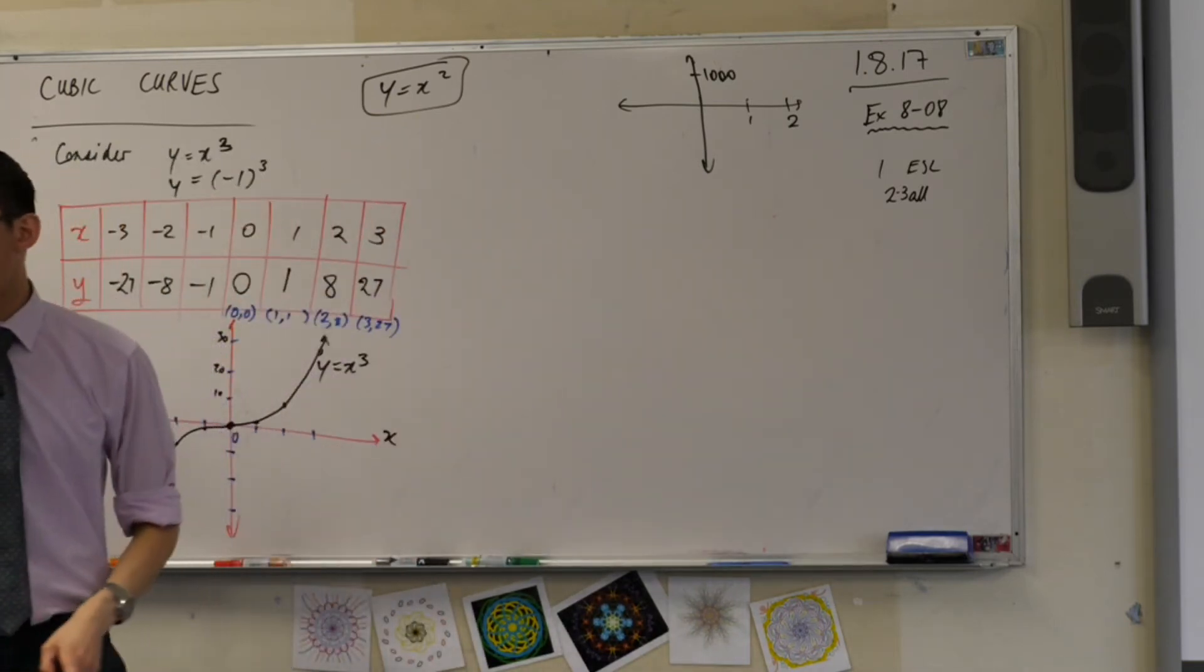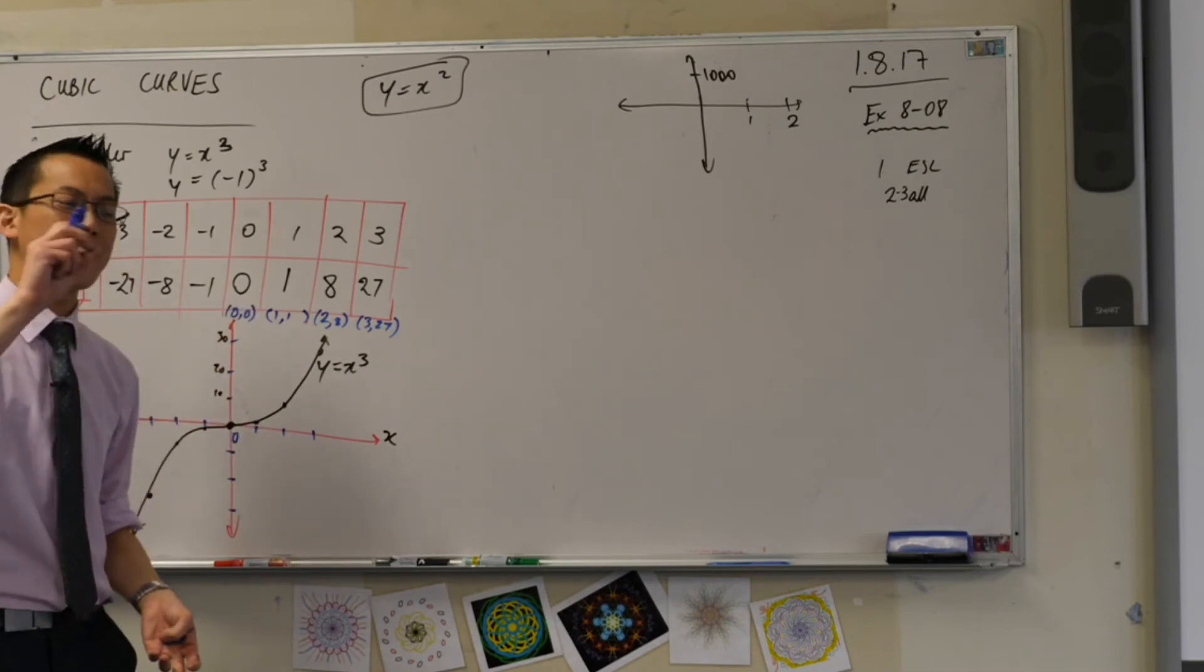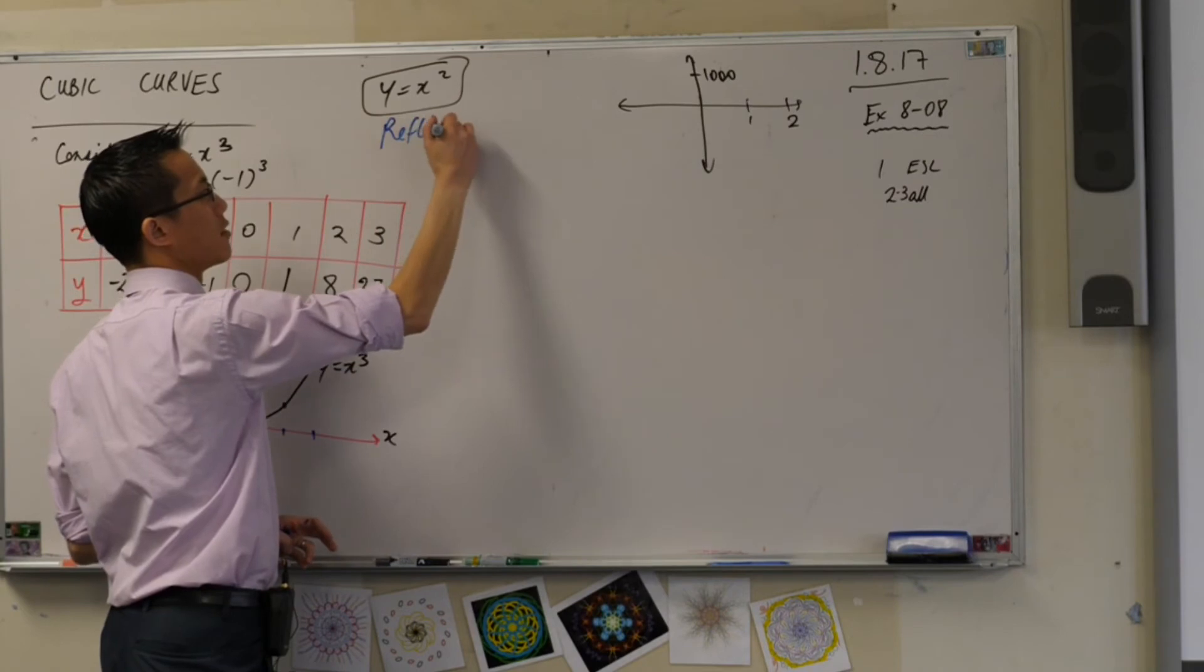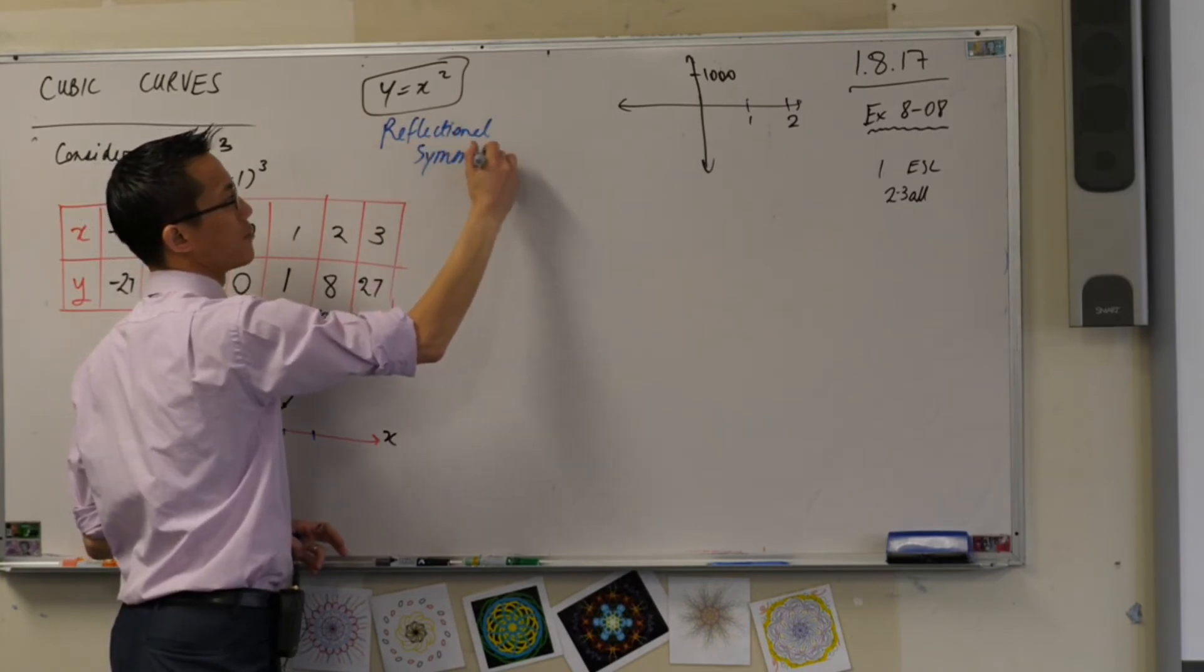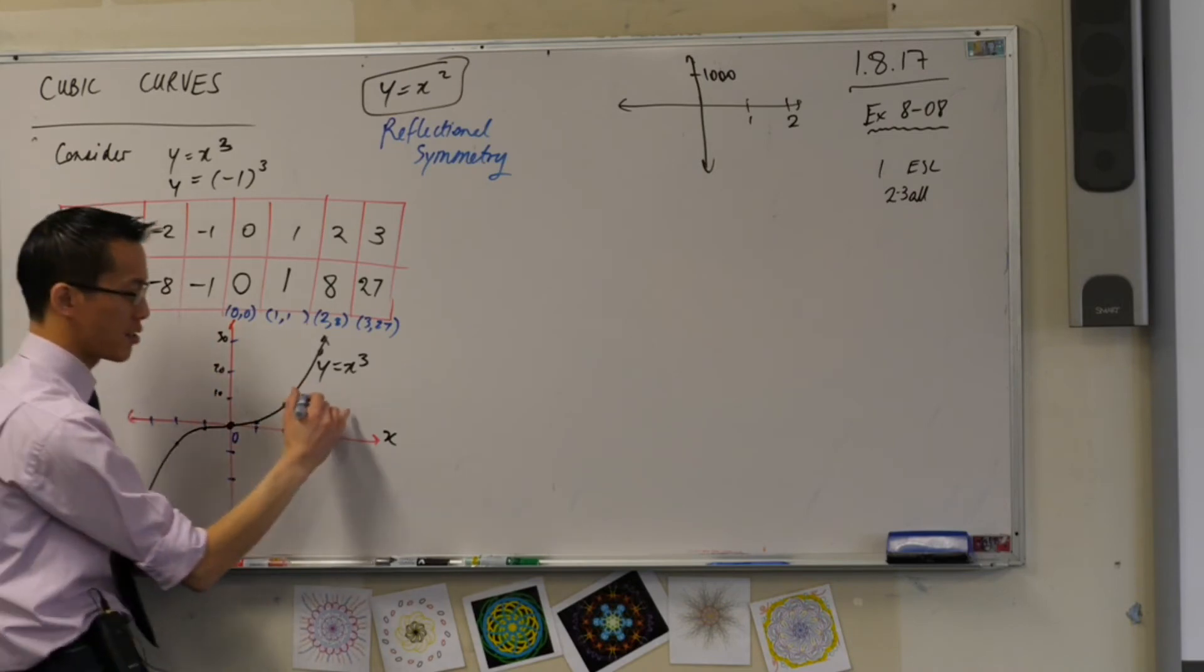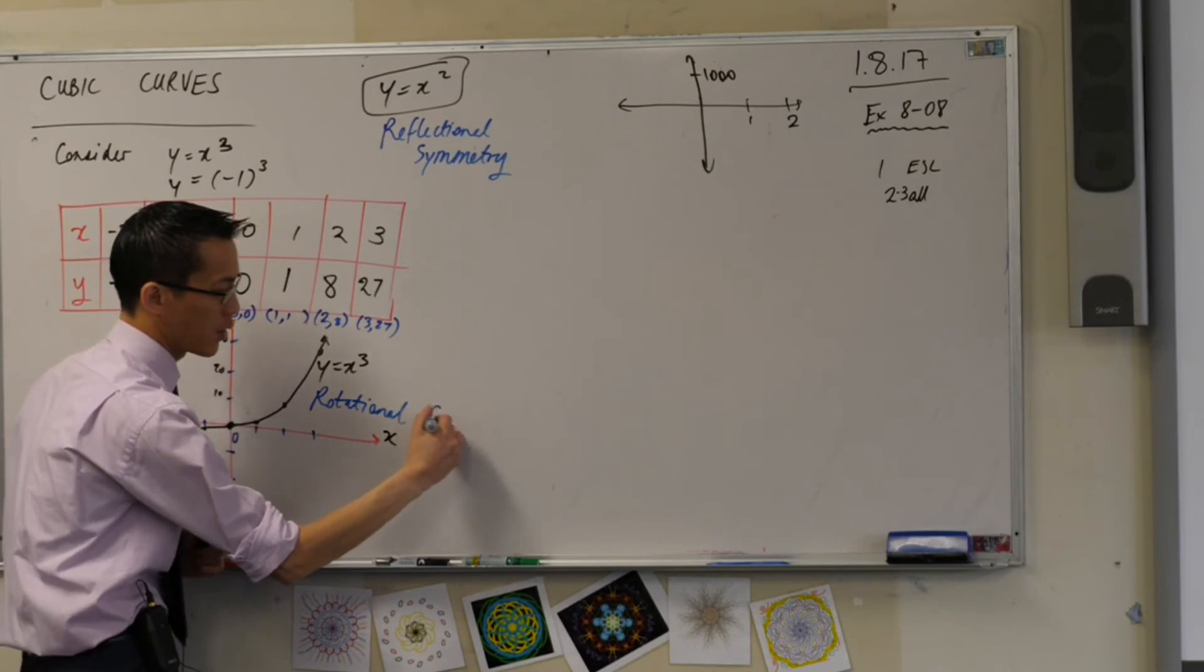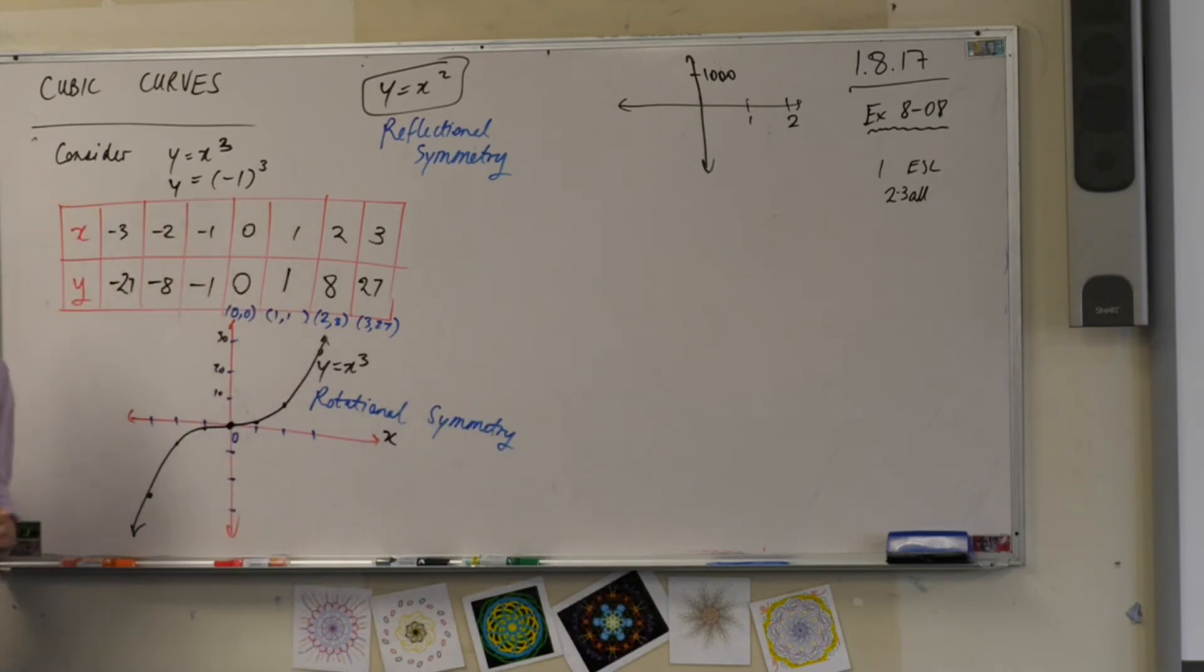So here's what I'd like you to jot down to summarize that. Y equals x squared, maybe go back to a page where you have a parabola. It's not just symmetrical. It has a specific kind of symmetry. We call it reflectional symmetry. Y equals x cubed has symmetry as well. It's just a different kind. This is not reflectional. We rotated, right? So we call this rotational symmetry.